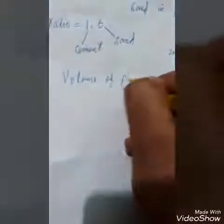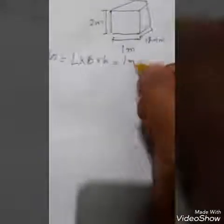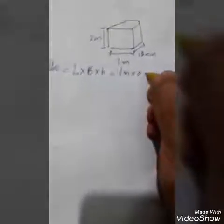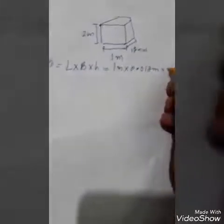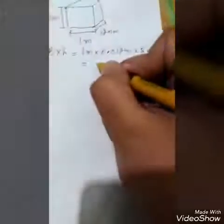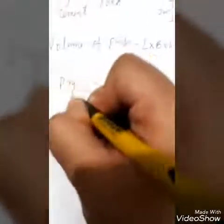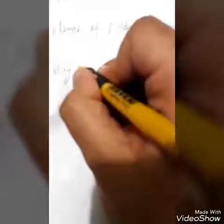The volume of plaster will be length into width into height. Length is 1 meter, width is 0.012 meter (converting 12 mm to meters), and height is 2 meters. The total volume of plaster will be 0.024 cubic meters.